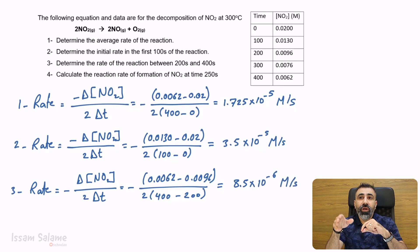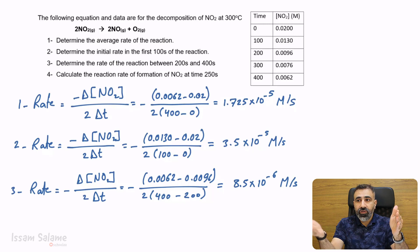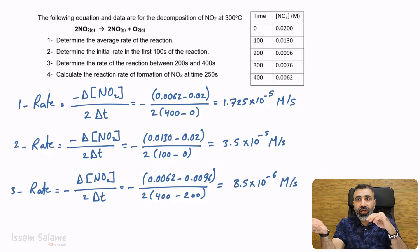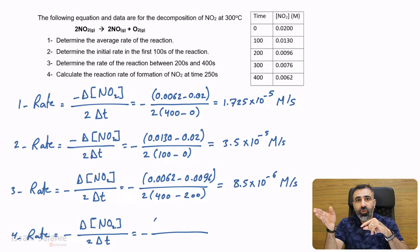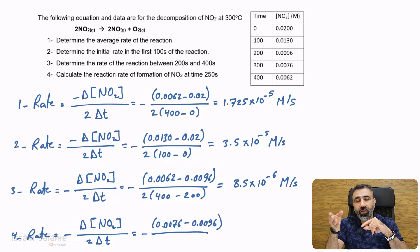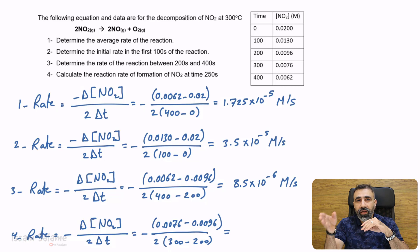The last question: calculate the rate of the formation of NO2 at time 250 seconds. In this case, we have to take one time after 250 and one time before 250 — the one after is the final and the one before is the initial. So I take 300 as the final and 200 as the initial, and replace them in the rate law: rate equals negative delta concentration of NO2 divided by 2 delta T. Concentration final is 0.0076 (at 300 seconds) minus 0.0096 (at 200 seconds), divided by 2 into (300 minus 200). The answer is 1 times 10 to the power negative 5 molar per second.